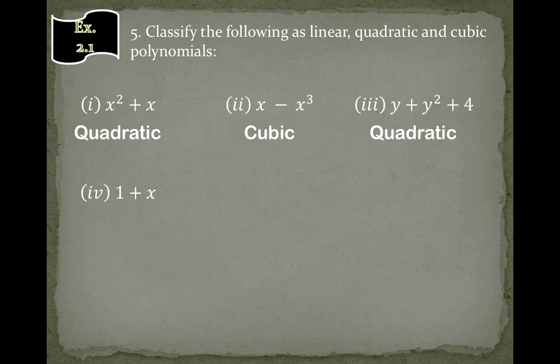Fourth is 1 plus x, which has degree 1, so it is linear. Fifth is 3t, which also has degree 1, so it is linear.